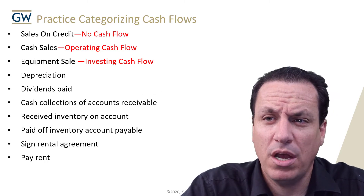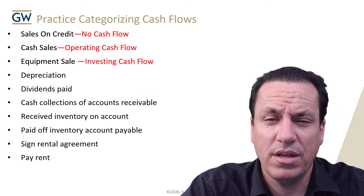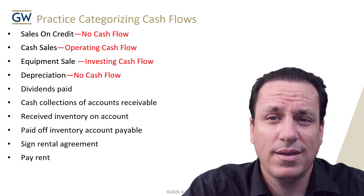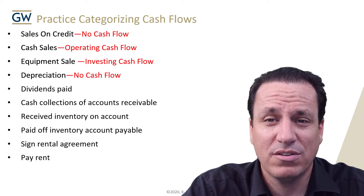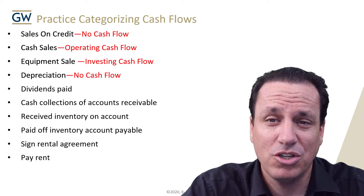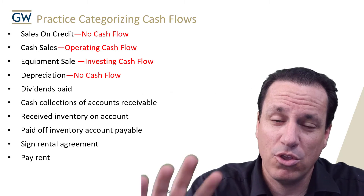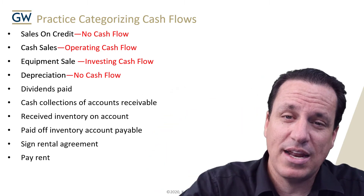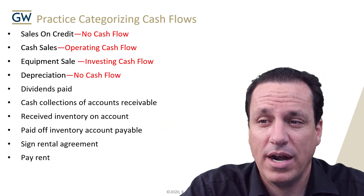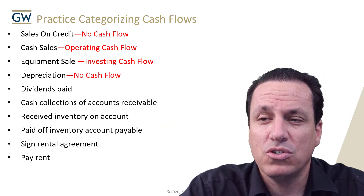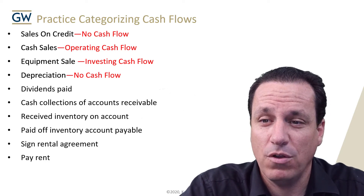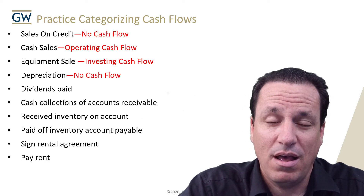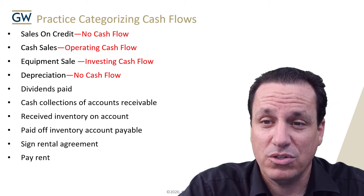Depreciation — which one is it? Operating, investing, financing? It's another trick. It's not operating, investing, or financing — there's no cash flow with depreciation. You'd want to make sure you pulled that out; you'd clean that out of your net income. So there's no cash flow with depreciation, and you have to pull it out of net income if you're doing the indirect method of creating a cash flow statement.